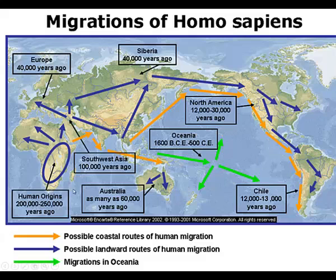So we're talking 250,000 years ago, and then you can see how it spreads from India to Europe, to Siberia, to North America and South America over the course of time as people began to move.